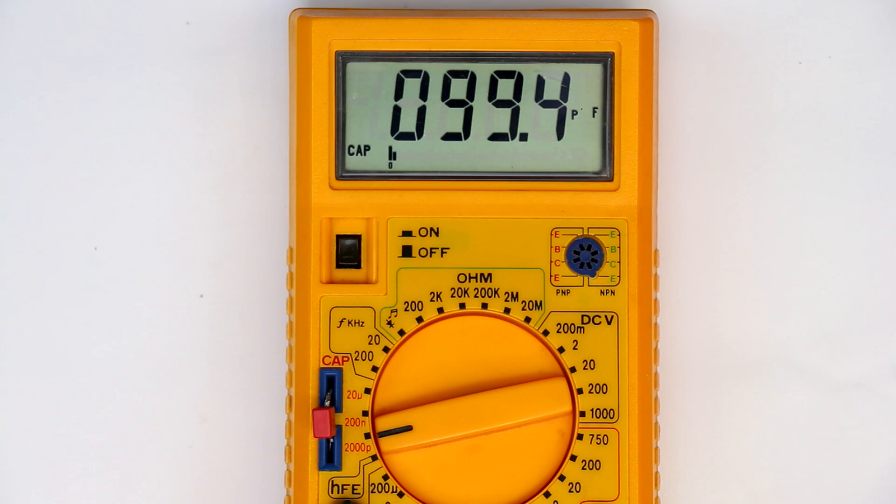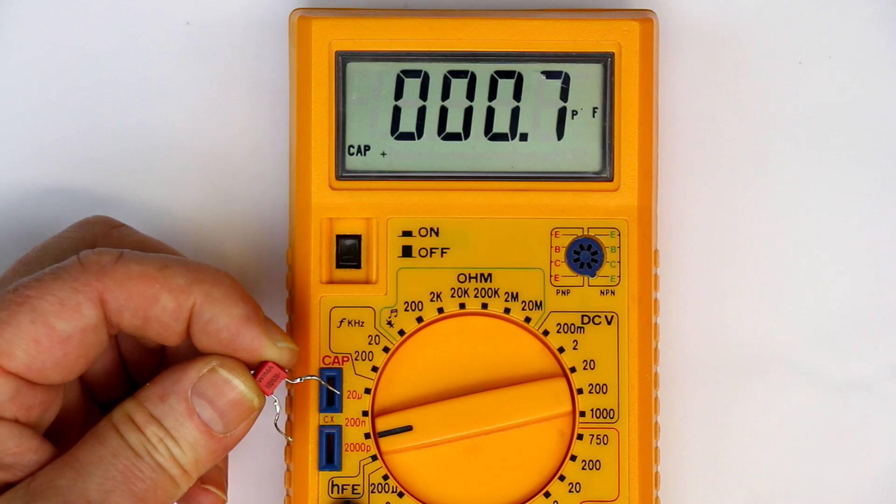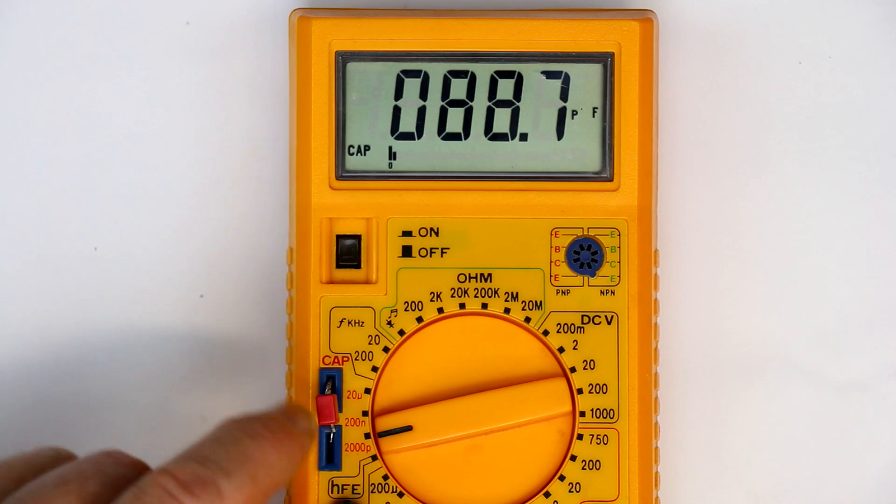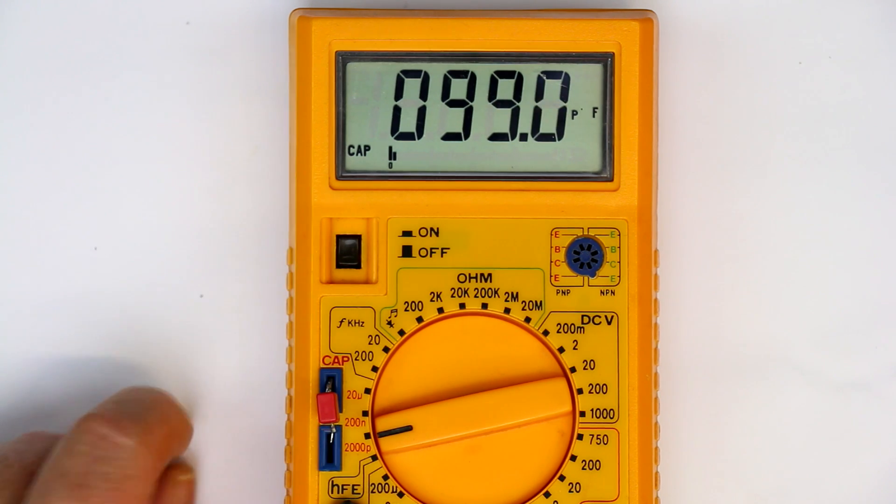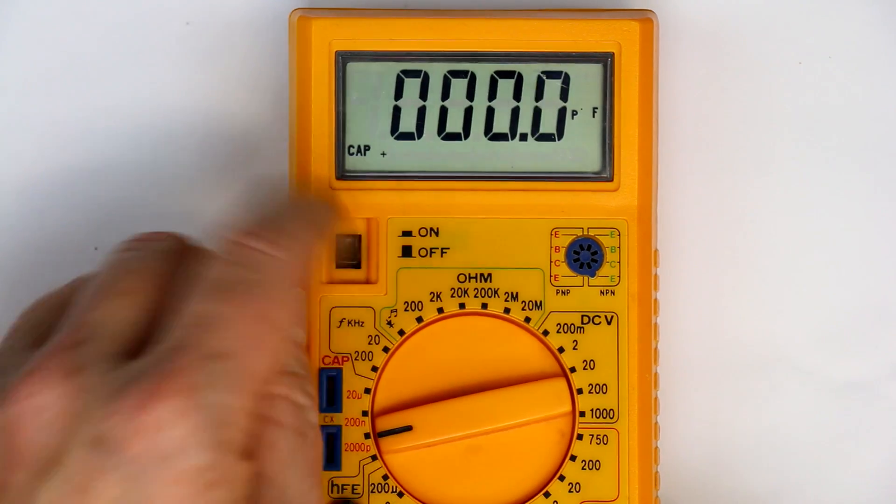And so let's measure the 100 picofarad 1% and claims an accuracy of 2%. And what do we get? 99.4. So that is even better than 1% at the moment. You cannot decide is the capacitor the more accurate one or the multimeter. So that's quite a nice feature here. The only downside is that you can see I had to solder some extensions to the capacitor because you only can use this here with the slots and insert your capacitor.